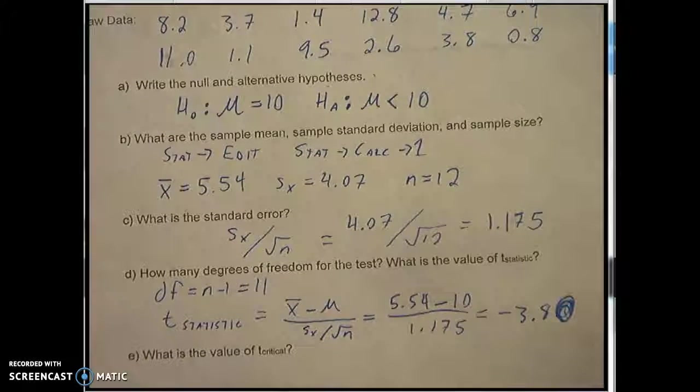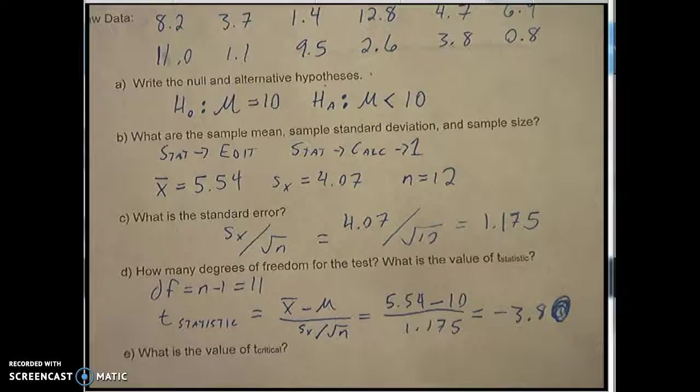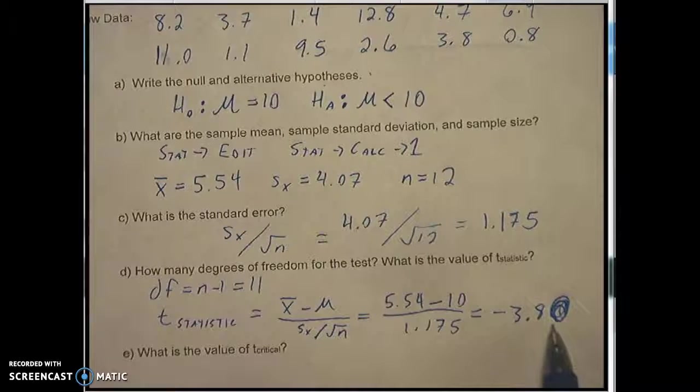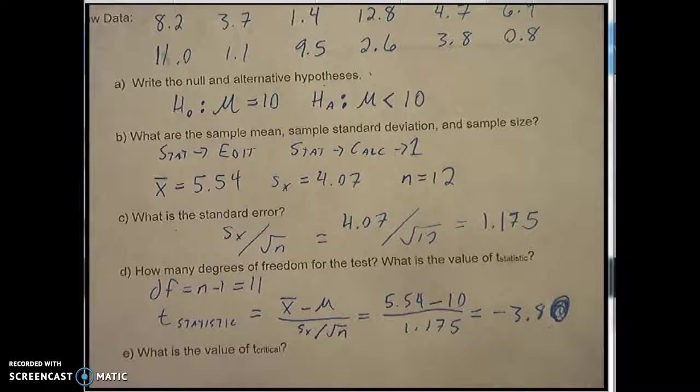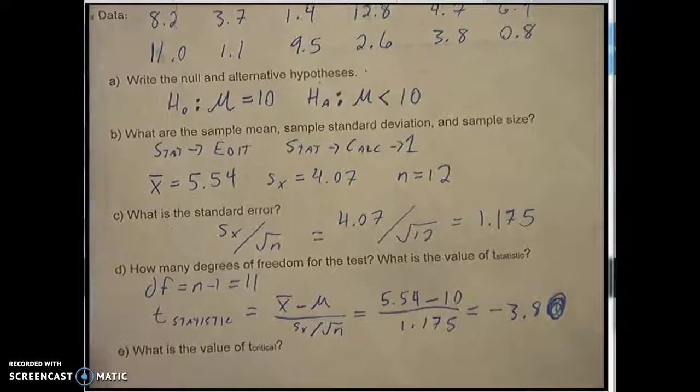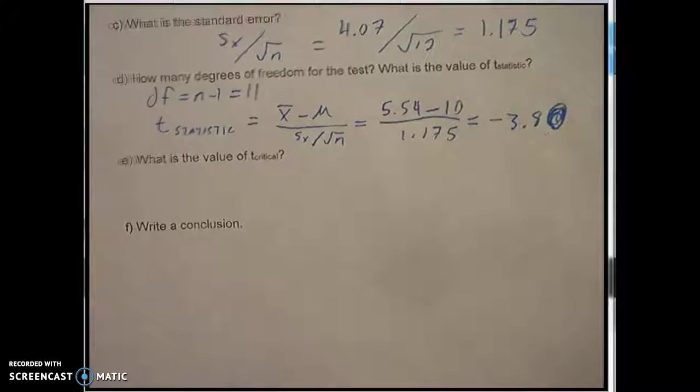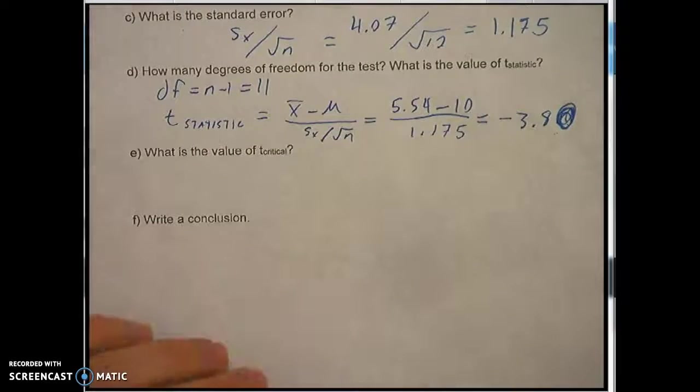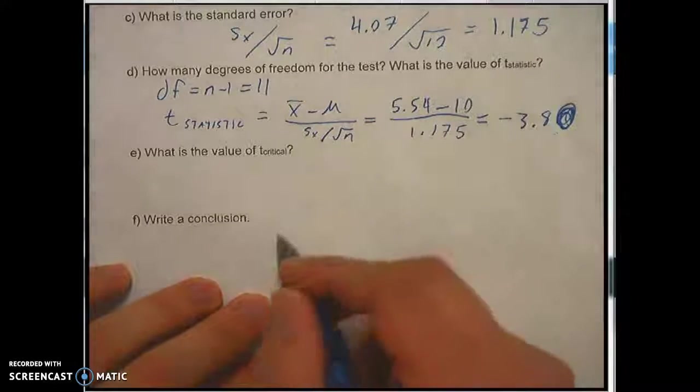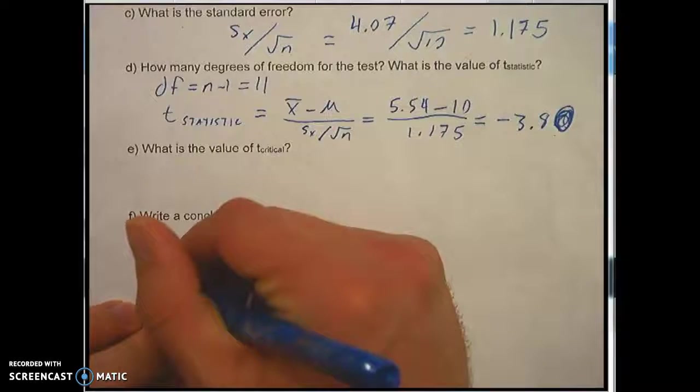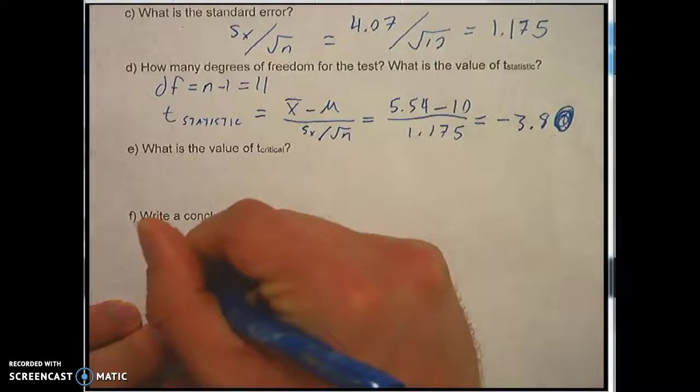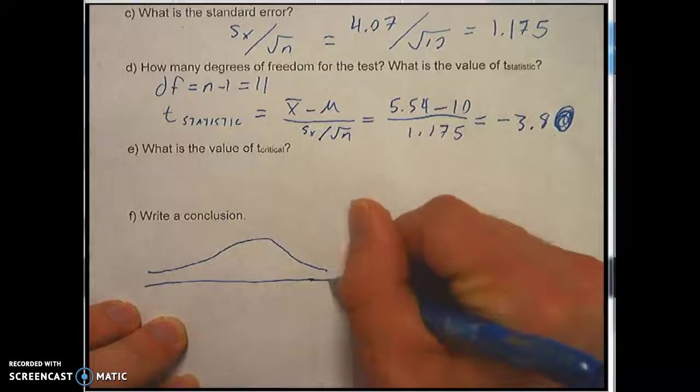Now the question is we're going to take this number and we're going to ask ourselves is that number sufficient to reject the null hypothesis? But in order to know that we have to have a critical value to compare it to. So let me draw a picture here. I'm going to draw it right here.